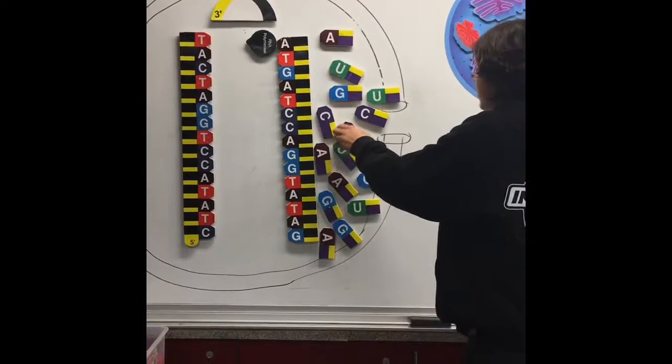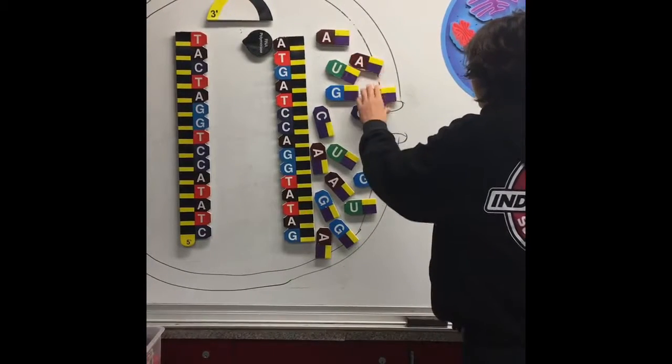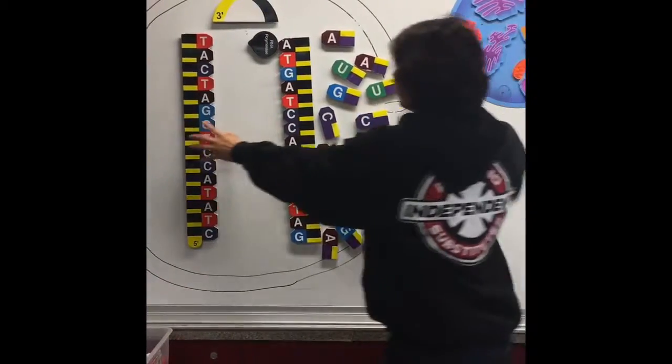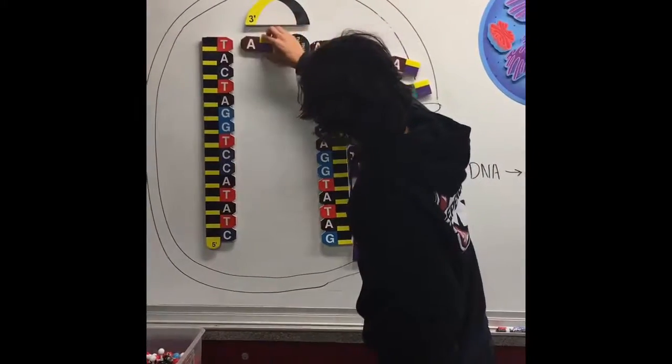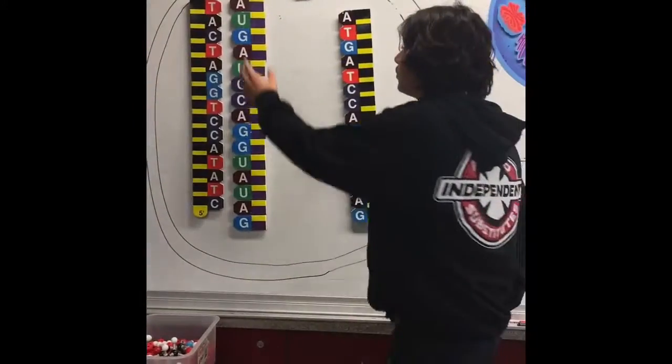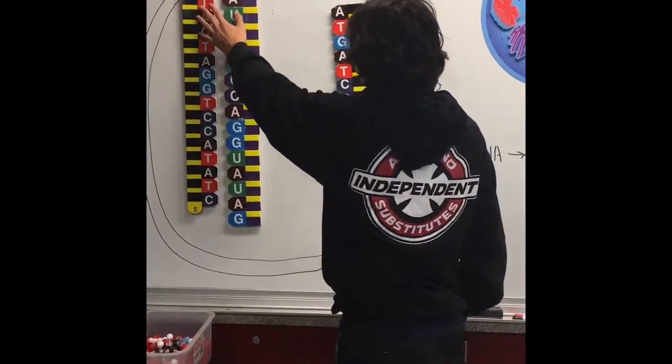The nucleotides used for RNA are adenine, uracil, guanine, and cytosine. So what I did was we made RNA and as you know,